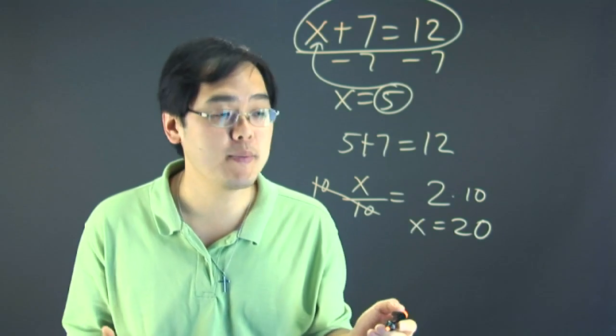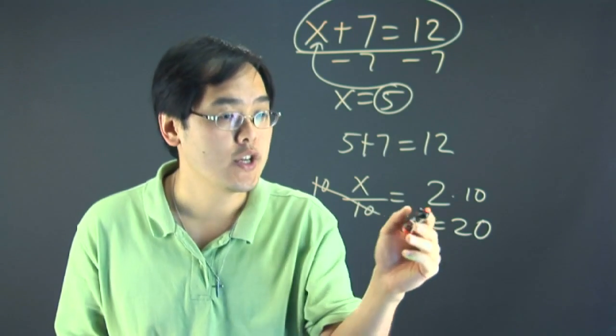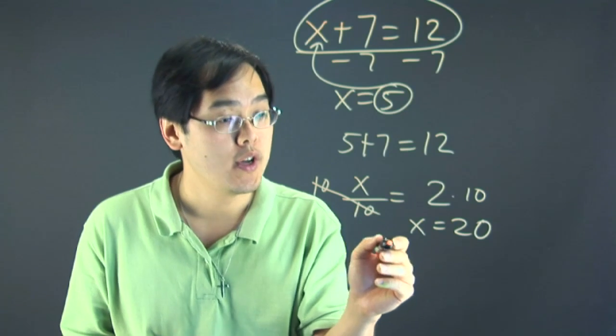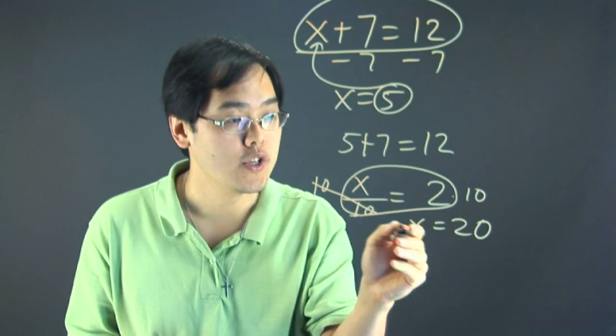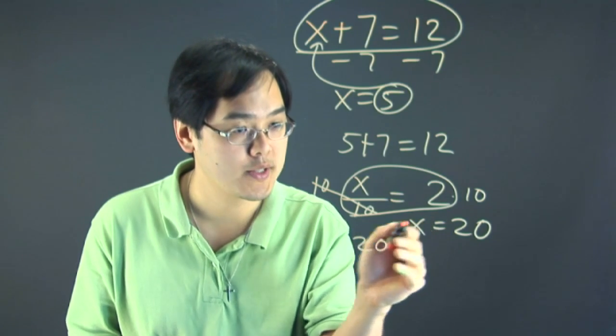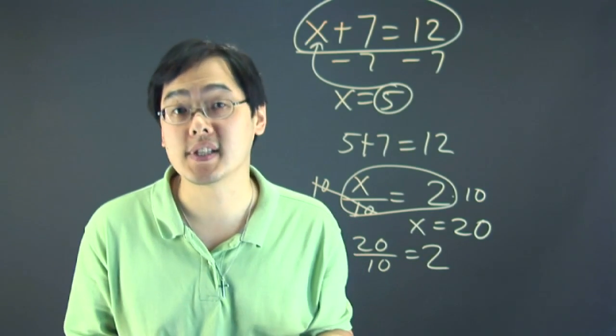But again, reasonableness in math means are you able to plug in the 20 back into place of x into the original equation. So, the original equation was x over 10 equals 2. So, we're going to have 20 for x over 10. And does that equal to 2? Obviously it does.